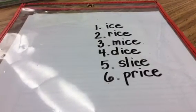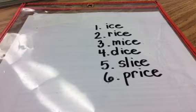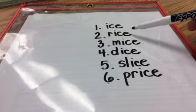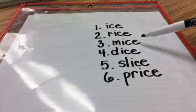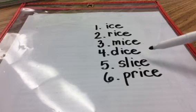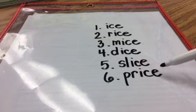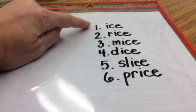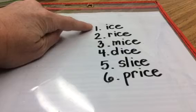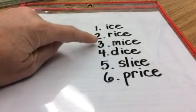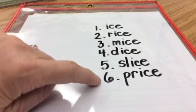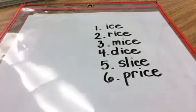These are all rhyming words. We have ice, rice, mice, dice, slice, and price. Now your turn — read these words. Ready? Go. Good job.